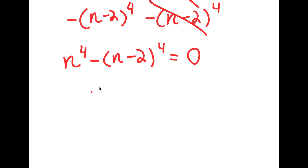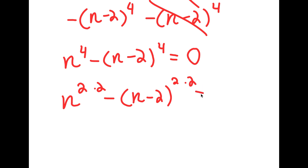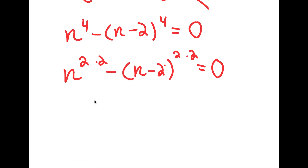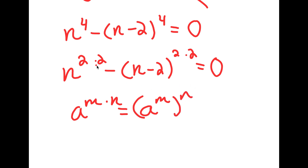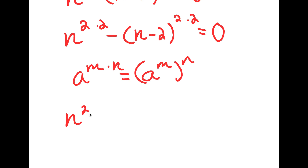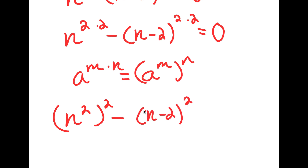From here, I'm going to rewrite this as n to the power of 2 times 2 minus n minus 2 to the power of 2 times 2 is equal to 0. If I have something in the form a to the power of m times n, this is equal to a to the power of m to the power of n. So n to the power of 2 times 2 equals n to the power of 2 to the power of 2, minus n minus 2 to the power of 2 to the power of 2, equals 0.